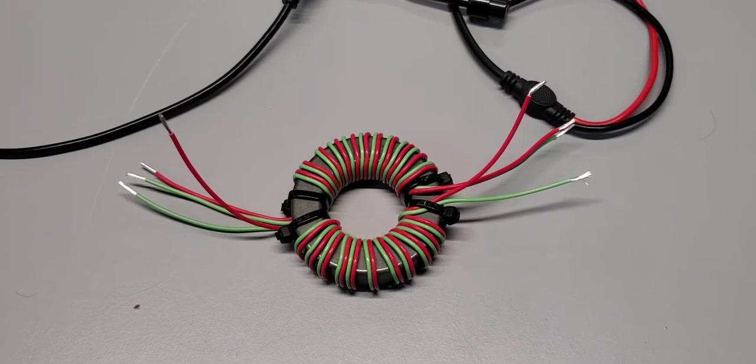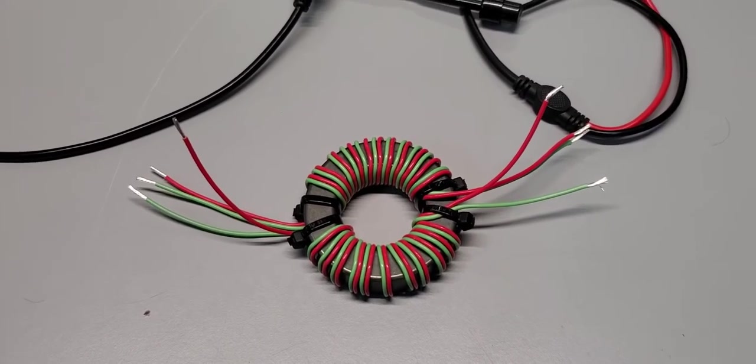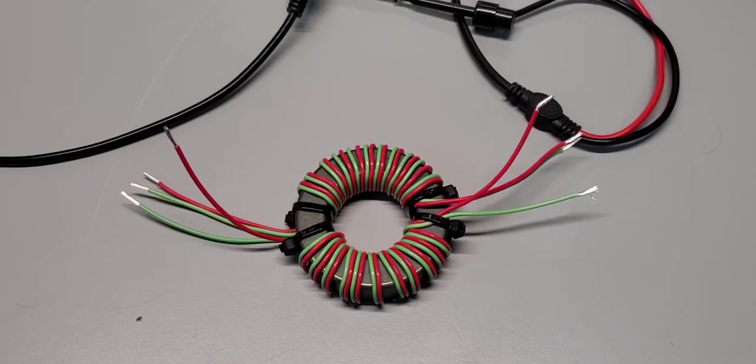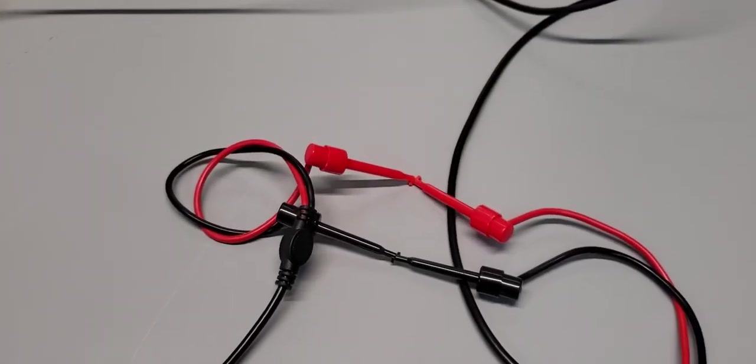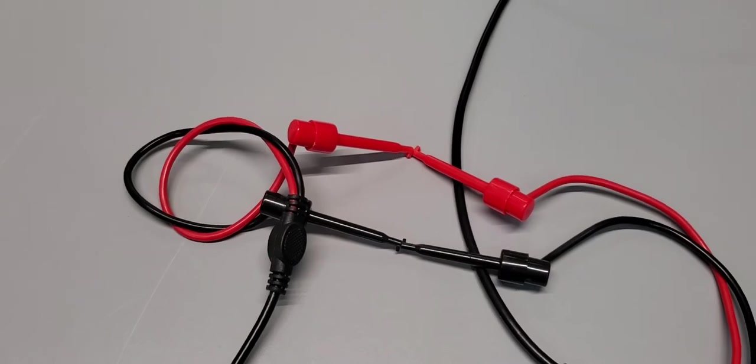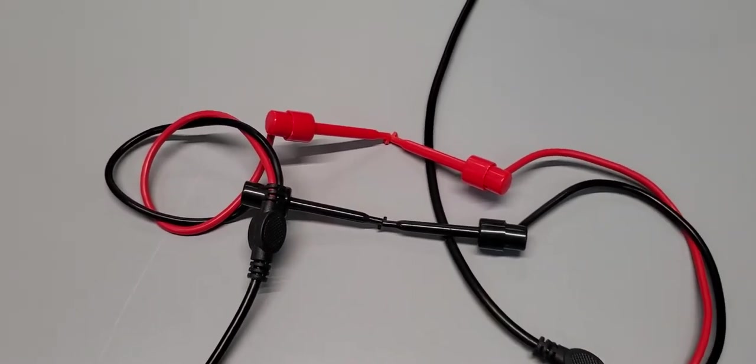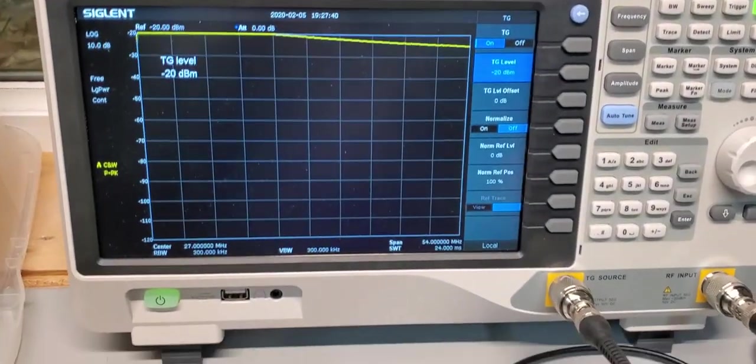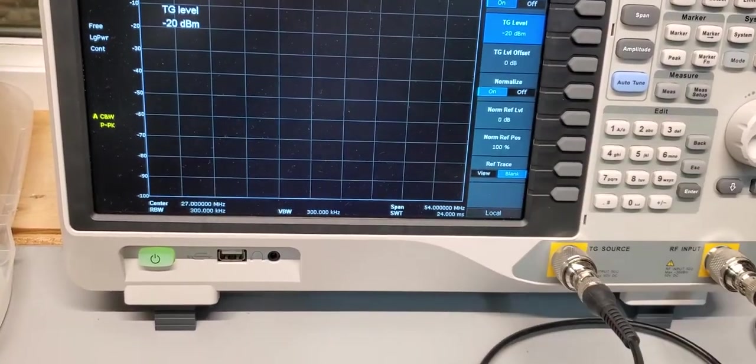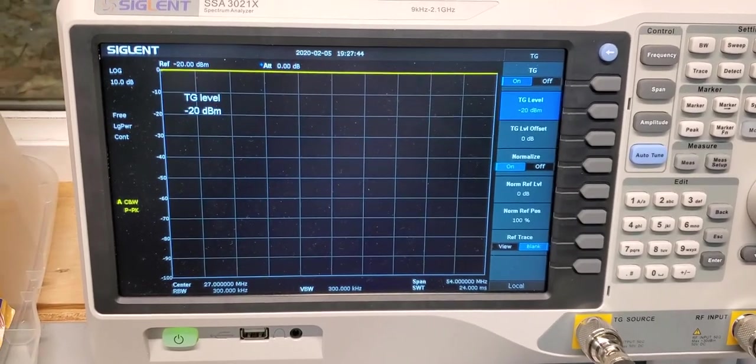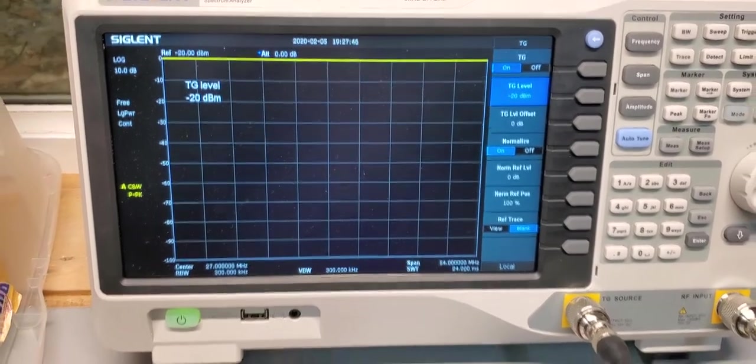We're going to make a couple of tests here on our balun, but before we can do the tests we're going to have to zero out our spectrum analyzer as a tracker. I just connect the wires directly here that I'm going to use, and on our spectrum analyzer we're just going to go ahead and normalize it.